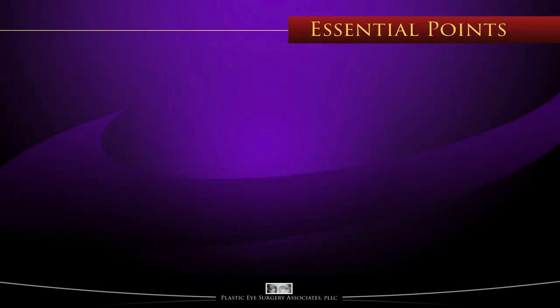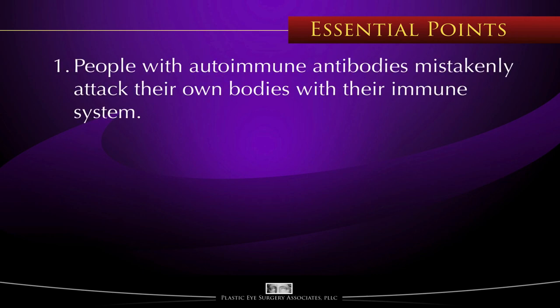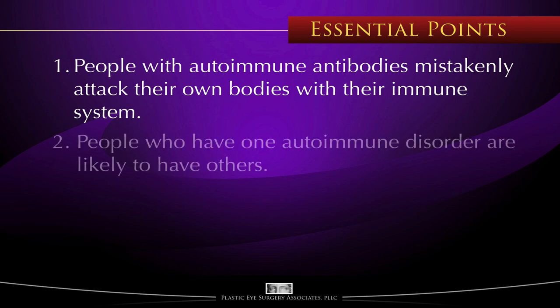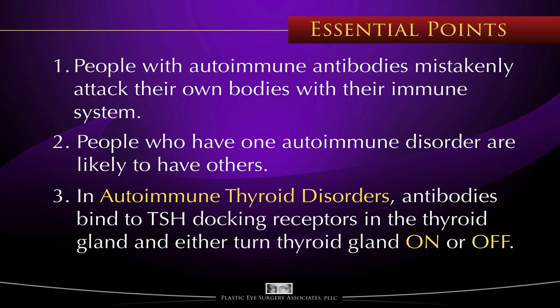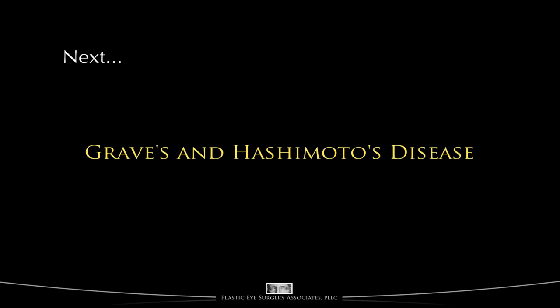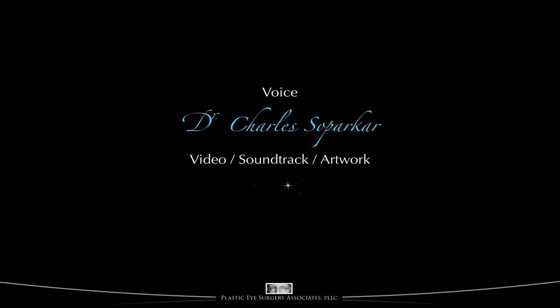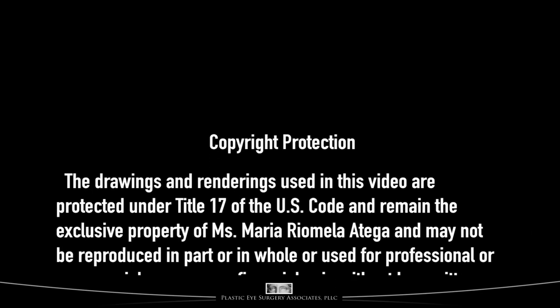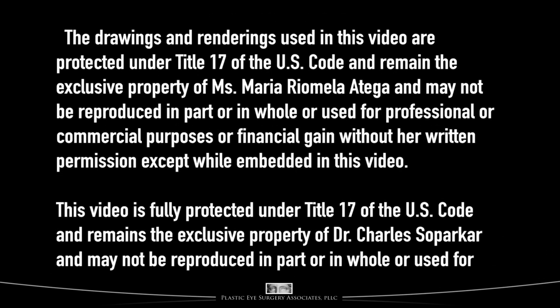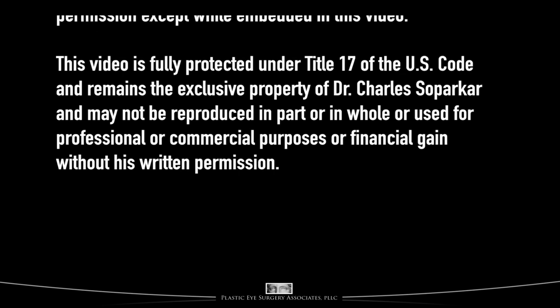To summarize this video: people who have autoimmune antibodies mistakenly attack their own bodies with their immune system, causing what we call autoimmune disease. People who have one autoimmune disorder are likely to have other autoimmune disorders as well. In autoimmune thyroid disorders, autoimmune antibodies bind to the TSH receptor and thyrocytes in the thyroid gland, and either turn the cells on if they are stimulating autoimmune antibodies, or turn the gland off if they are inhibitory autoimmune antibodies. I'll see you next time.